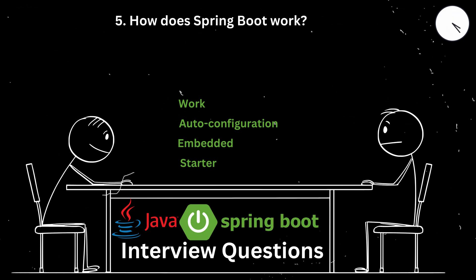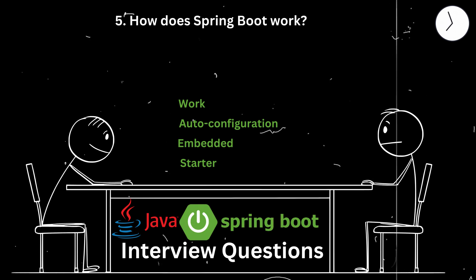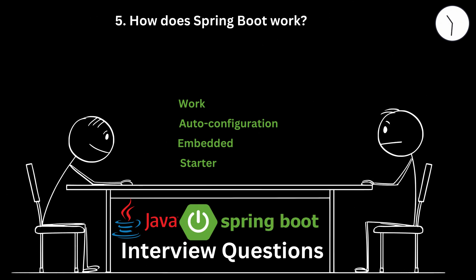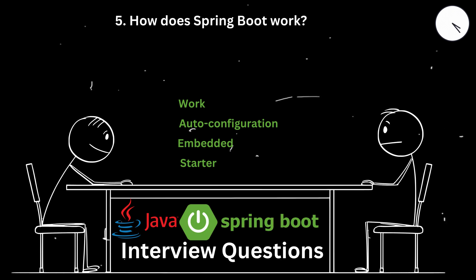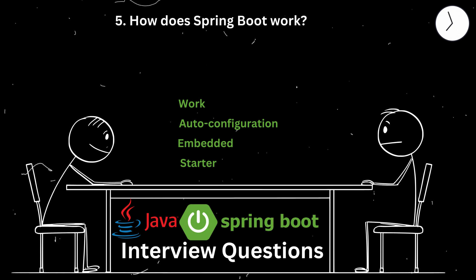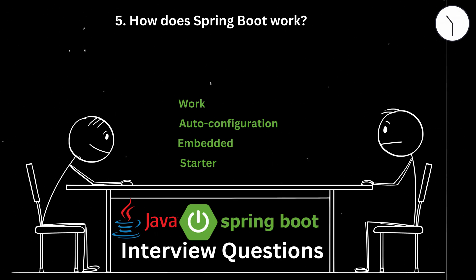Starter POMs: Spring Boot uses starter dependencies to bundle relevant dependencies for different functionalities, simplifying project setup. Using Spring Boot Starter Web for a blog platform project brought in Spring MVC, Jackson, and Tomcat dependencies automatically.